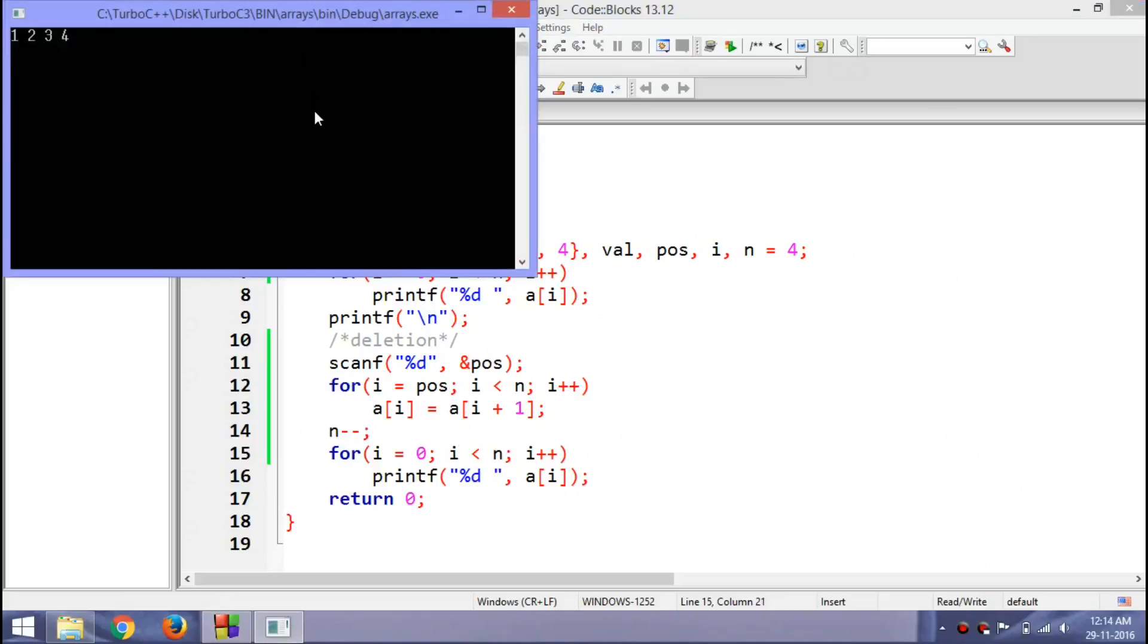So it is waiting for the value of pos. Let's say value of pos is 2. So according to the program, this is 0, 0th index, 1st index, 2nd index. So this 3 should be deleted. Let's check it. I am pressing enter and yeah, 3 is deleted.